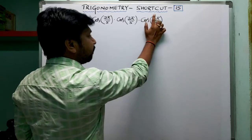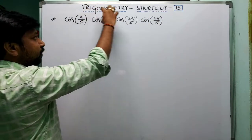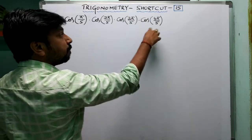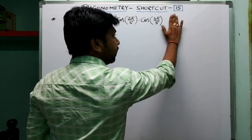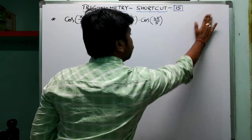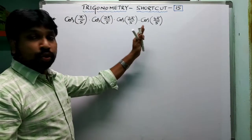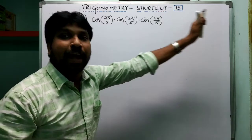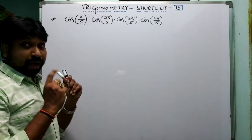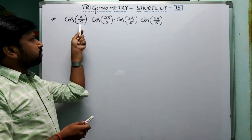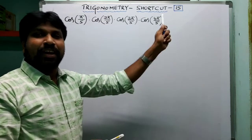The difference is: shortcut number 15 has terms cos(π/n), cos(2π/n), cos(3π/n), cos(4π/n) — all consecutive terms. Whereas shortcut number 14 involves terms like π/n, 2π/n, 2²π/n, 2³π/n — powers of 2 — so there is no 3π/n term, no 5π/n term. Shortcut number 14 uses 2, 2², 2³, 2⁴... like that. This shortcut instead uses cos(π/5), cos(2π/5), cos(3π/5), cos(4π/5) — consecutive terms.